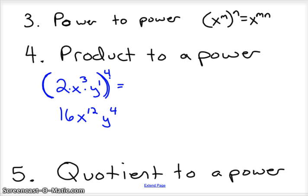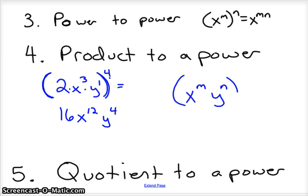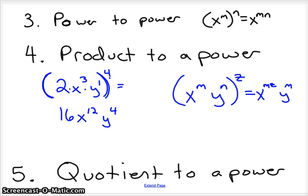Generally, it can be stated like this: x to the m, y to the n, all to the z power, equals x to the mz times y to the nz. That's product to power.